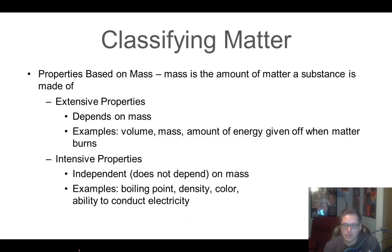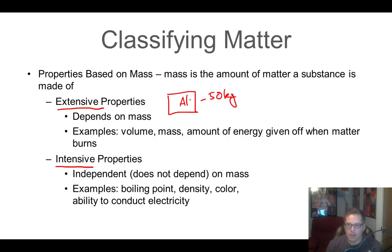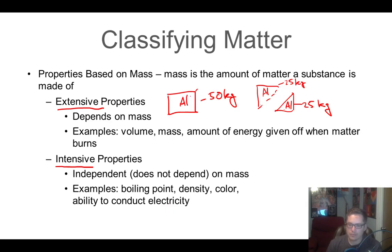We're still talking about classifying matter, but now we're going to look at specific properties. There are two types: extensive properties and intensive properties. Extensive properties depend on the mass of whatever you have. If you have a 50-kilogram chunk of aluminum and cut it in half, each piece weighs 25 kilograms — the value changes depending on how much you have. Mass is an extensive property. So is volume: if you have 50 milliliters of water and dump some out, you'll have less.